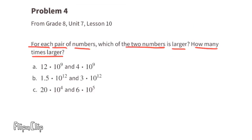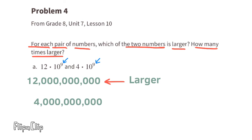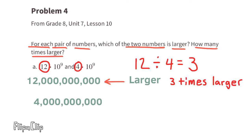Problem number four, from eighth grade Unit 7 Lesson 10: for each pair of numbers, which of the two numbers is larger and how many times larger? Part A: 12 times 10 to the power of 9 equals 12 billion, and 4 times 10 to the power of 9 equals 4 billion. Since 12 billion is greater than 4 billion, 12 × 10⁹ is the larger number. Since they're both being multiplied by 10⁹, we can just divide 12 by 4. Since 12 is 3 times larger than 4, then 12 × 10⁹ is 3 times larger than 4 × 10⁹.